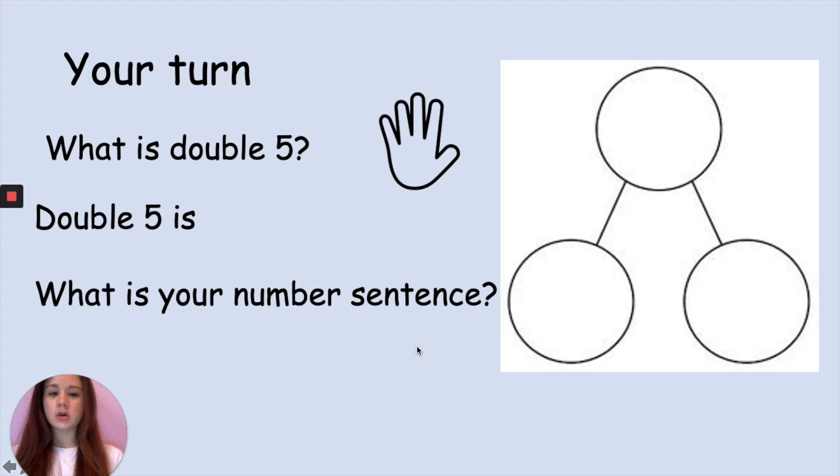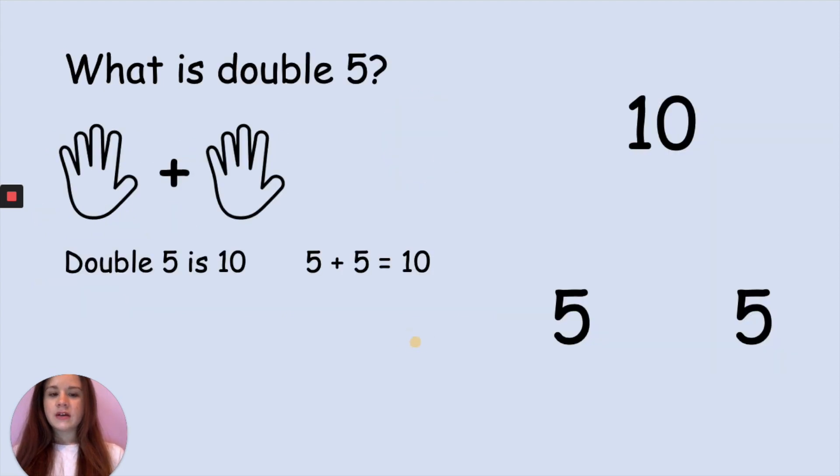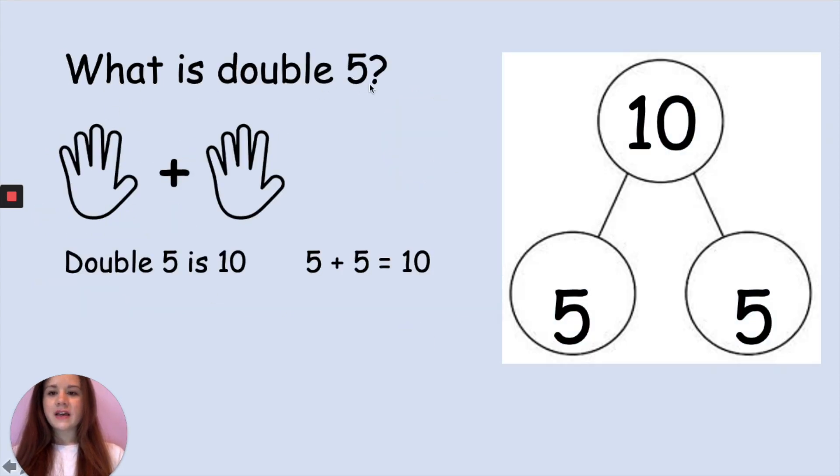Your answers are: double 5 is 10, so you can have 2 parts of 5 and your whole is 10. 5 add 5 equals 10. Double 5 is 10. 5 add 5 equals 10. Well done if you got that correct.